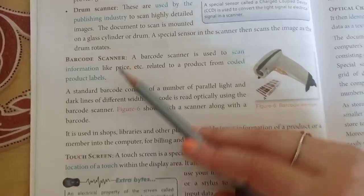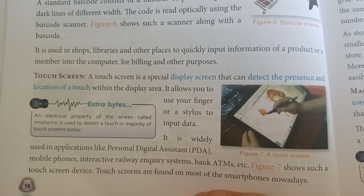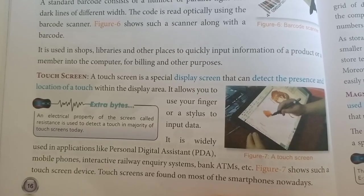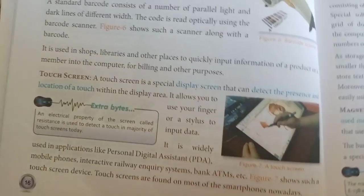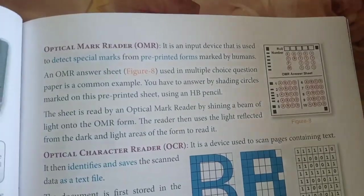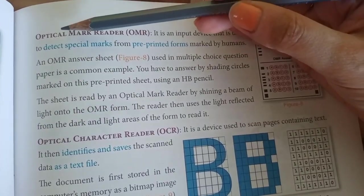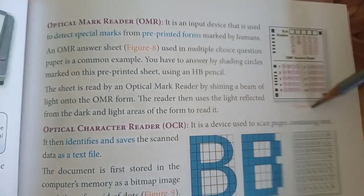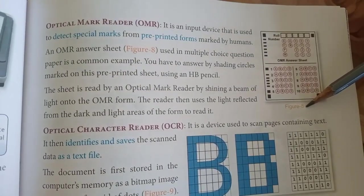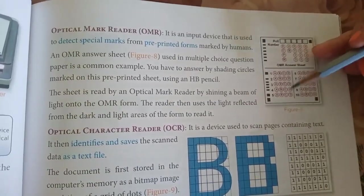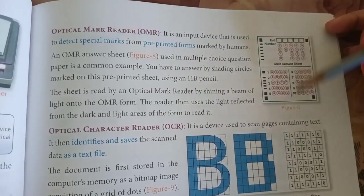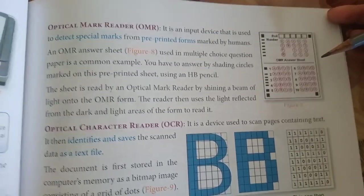Next is the touch screen. Nowadays mobile phones come with touch screen — on the screen we can use our fingers or a stylus to work easily. Next comes OMR, which stands for Optical Mark Reader. It is an input device used to read special dotted mark sheets, like the ones you fill during aptitude exams using an HB pencil. This device scans the sheet and gives the accurate result.